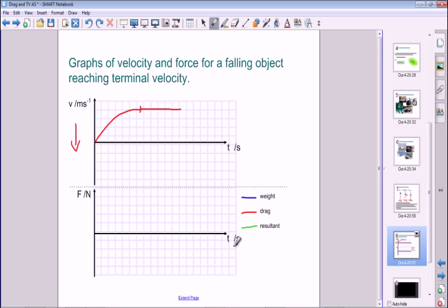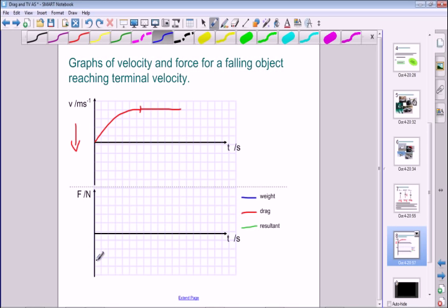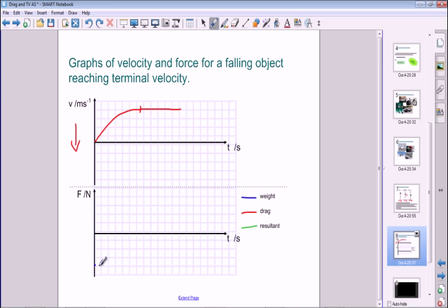Down here, we've got a force against time graph, and I want to try and draw all three of these forces on the same axes. We're looking at the weight and the drag force, and therefore the resultant force. Let's have a look at the weight first. Weight is constant, and we can say that it's negative because it's pointing downwards. So that's the opposite way to which I've drawn the graph up above. That's supposed to be a straight line.